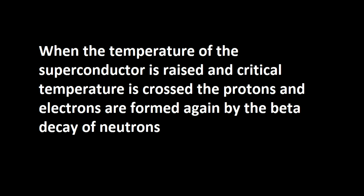When the temperature of the superconductor is raised and critical temperature is crossed, the protons and electrons are formed again by the beta decay of neutrons. Anti-neutrinos are emitted in this process.